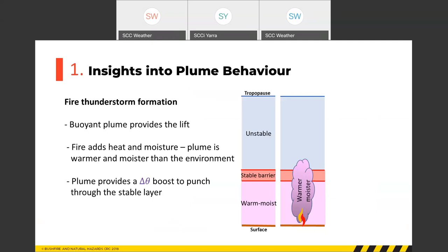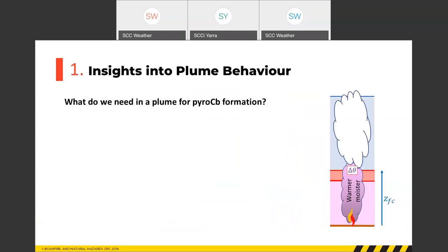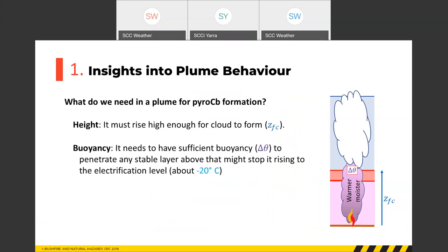Throughout this presentation, plume buoyancy is expressed as delta theta — how much warmer the plume is than the environment, where theta represents potential temperature. The plume needs height: it must rise high enough for cloud to form at the free convection height. It also needs sufficient buoyancy to penetrate any stable layer between the condensation level and the electrification level, which is commonly taken as minus 20 degrees C.